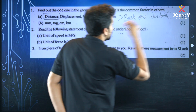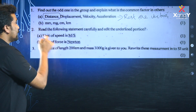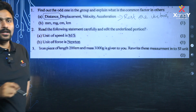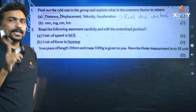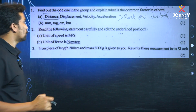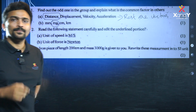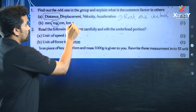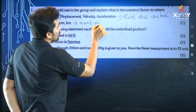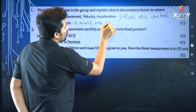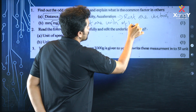Another odd-one-out question: millimeter, milligram, centimeter, kilometer. Millimeter, centimeter, and kilometer are all units of length measurement, while milligram is a unit of mass measurement. So the odd one out is milligram, because the rest are units of length.